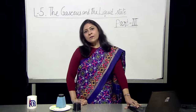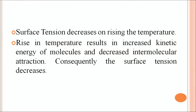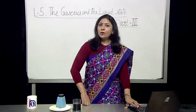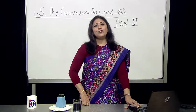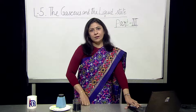Surface tension refers to the amount of force acting per unit length perpendicular to a line drawn on the surface of the liquid. The formula is: surface tension = F / L (force per unit length). It is denoted by the Greek letter gamma and its unit is Newton per meter. Surface tension decreases on rising temperature. When we increase temperature, kinetic energy of the molecules is more, which decreases the intermolecular force of attraction, and consequently the surface tension decreases.